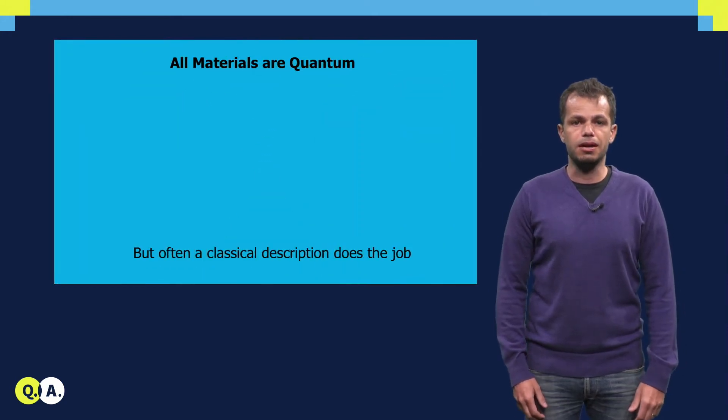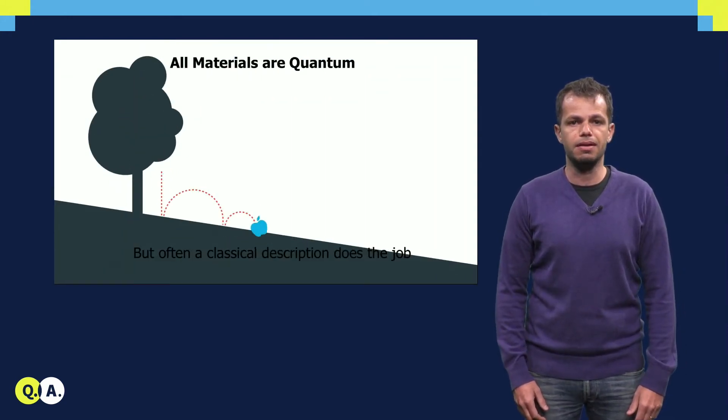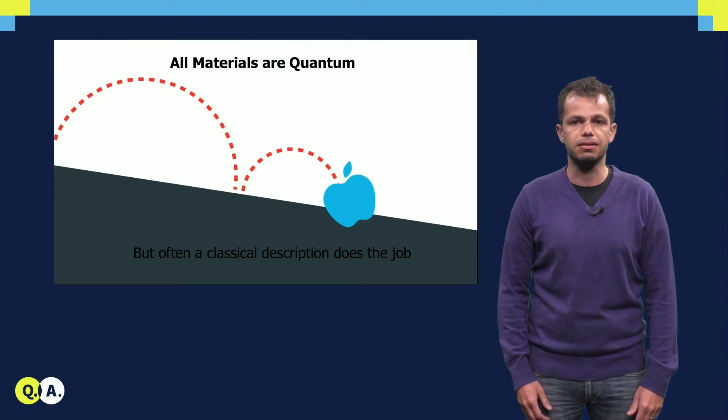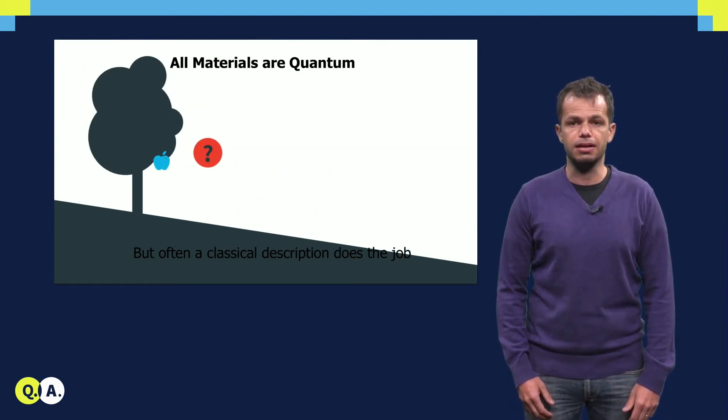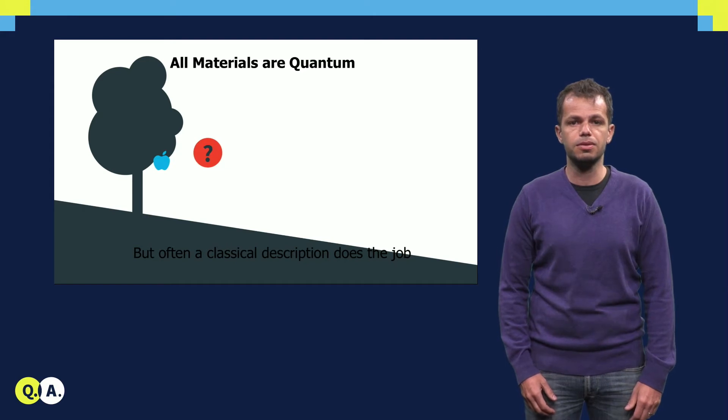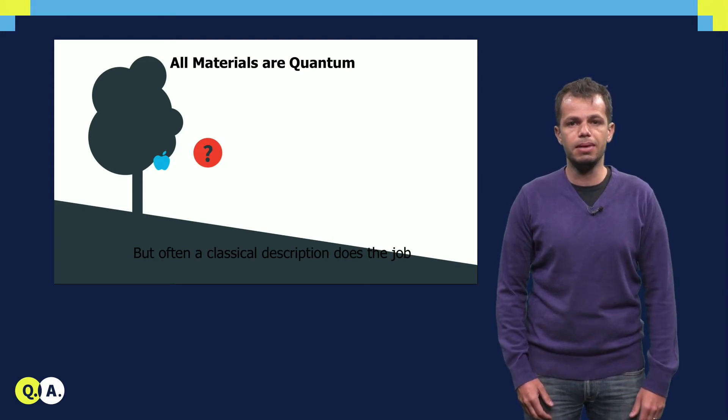This is because we can often approximate the quantum behavior in materials by a classical description. It turns out that a classical description is in fact suitable for most of the phenomena that we experience in the macroscopic world around us.